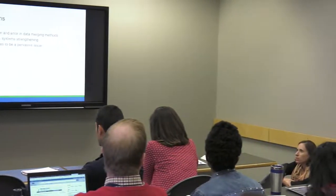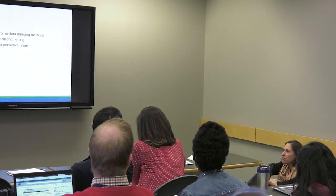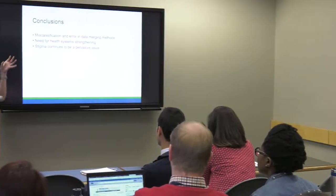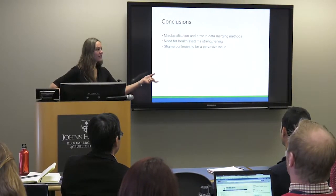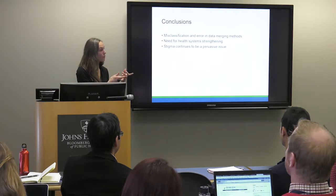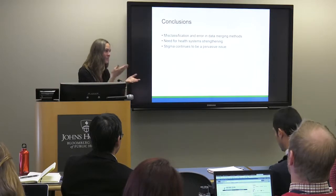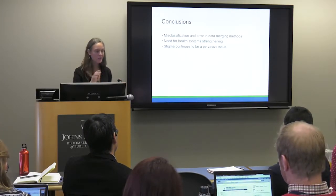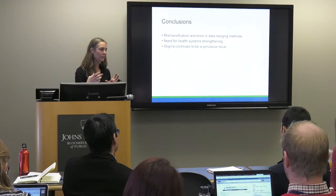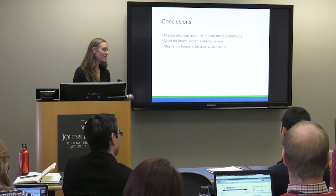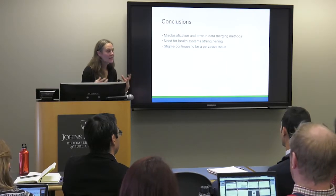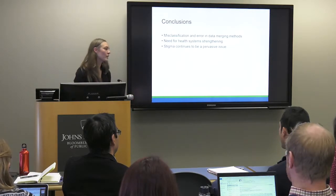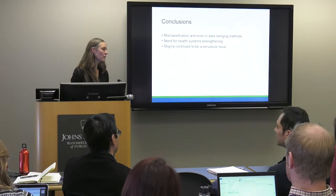Question: did you consider applying your algorithm to the people found in the original survey who reported being engaged in care as a validation? The response: those who said they were in care actually showed us their enrollment card with their number, so they were easy to match. We did apply the algorithm to those people and found some slight error, but not as bad as for those who didn't engage in care. The issue of stigma is tricky because if someone is using a different name, there's no way to put their records together.